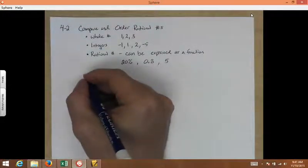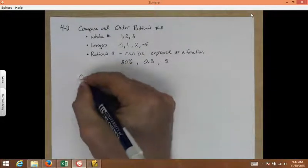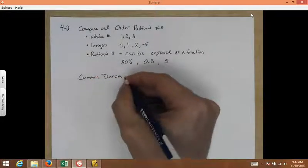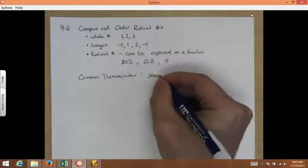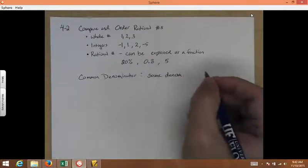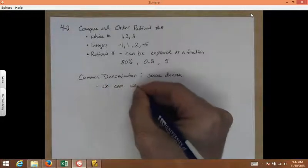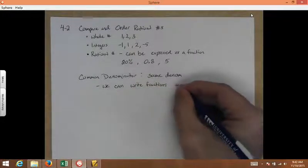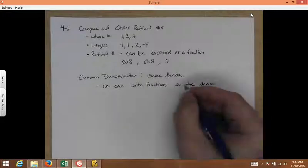Next thing we need to review and go over in order to compare and order rational numbers is common denominator. A common denominator is when you have two or more fractions and they have the same denominator. They have the same denominator, they have it in common, that's where we get it from, common denominator. So what we can do is we can write fractions or rewrite them so the denominators are the same.